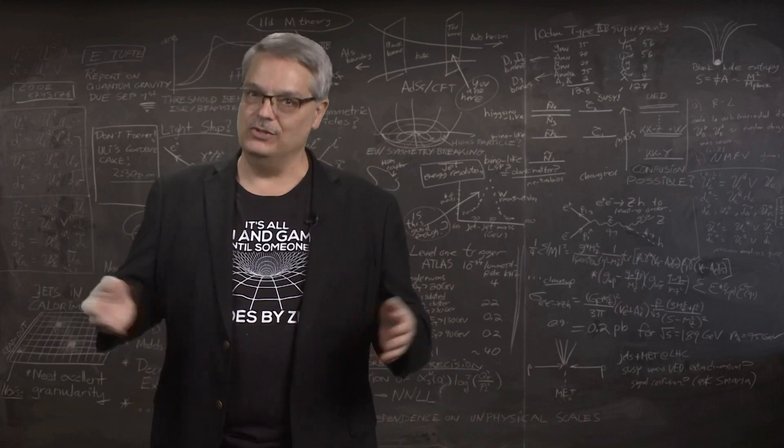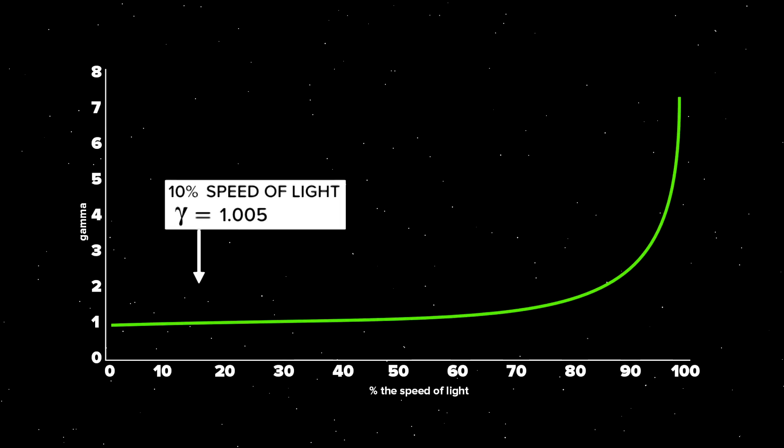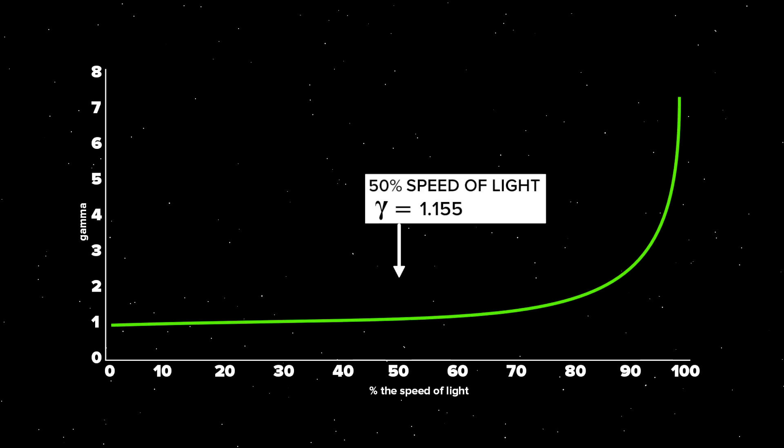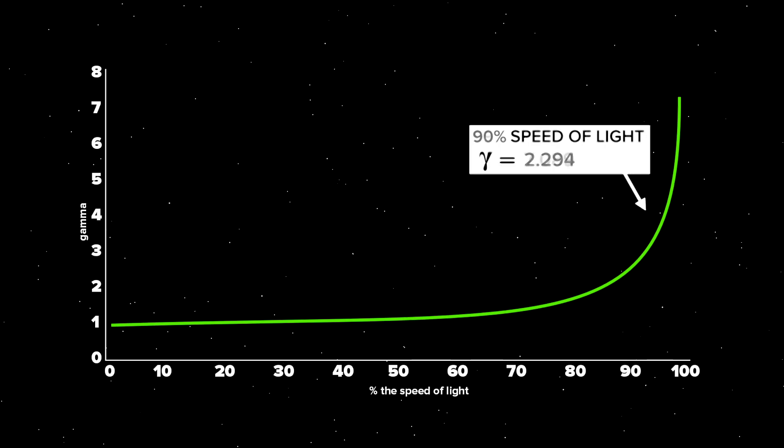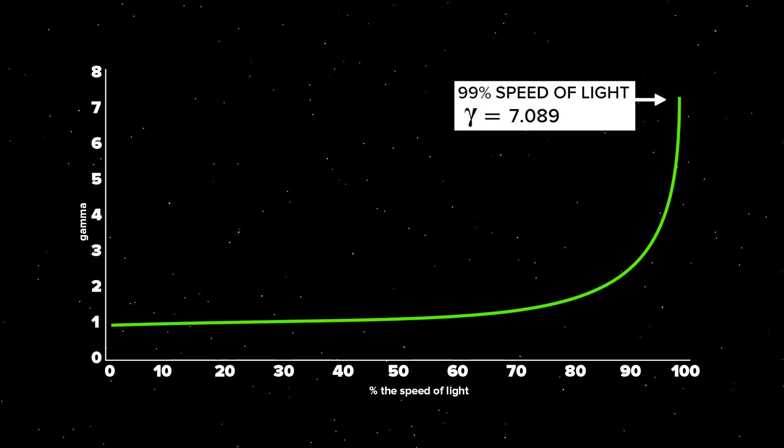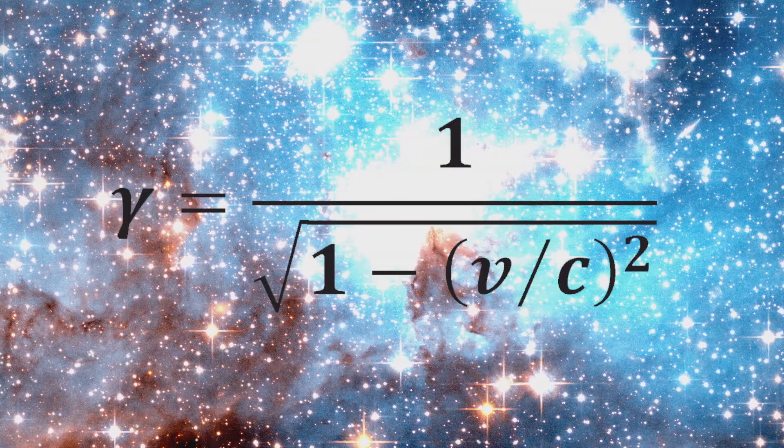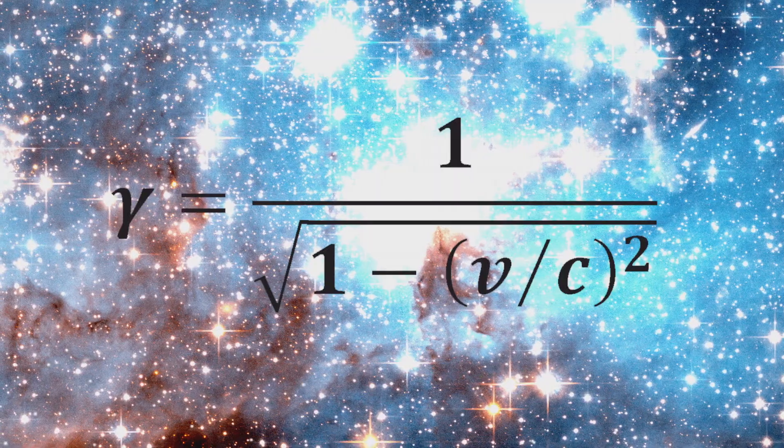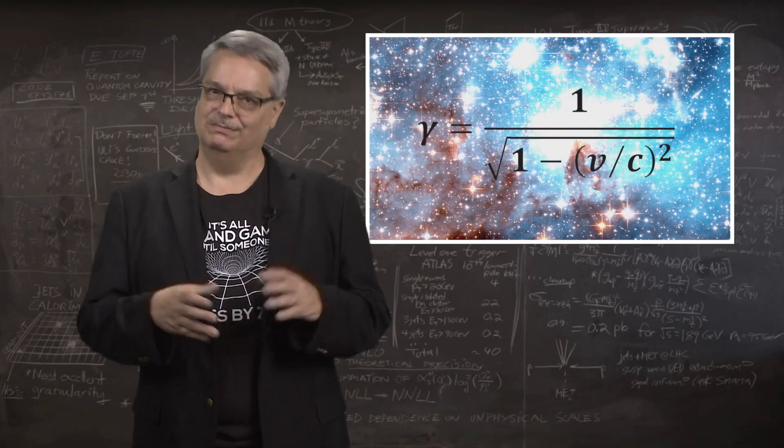But when you start going very fast, you can't do that anymore. At 10% the speed of light, gamma is 1.005. At 50% the speed of light, gamma is 1.155. And at 90% the speed of light, gamma is 2.294. When you get to 99% the speed of light, gamma is 7.089. And as you get even closer to the speed of light, gamma gets bigger and bigger. As you approach the speed of light, gamma becomes infinite. The equation here on the screen is how you calculate gamma. The symbol v is velocity and c is the speed of light. I just put it here if you want to play with the numbers yourself. If you don't care to do that, you don't need to worry about it. But I know some of my viewers really do love their equations.